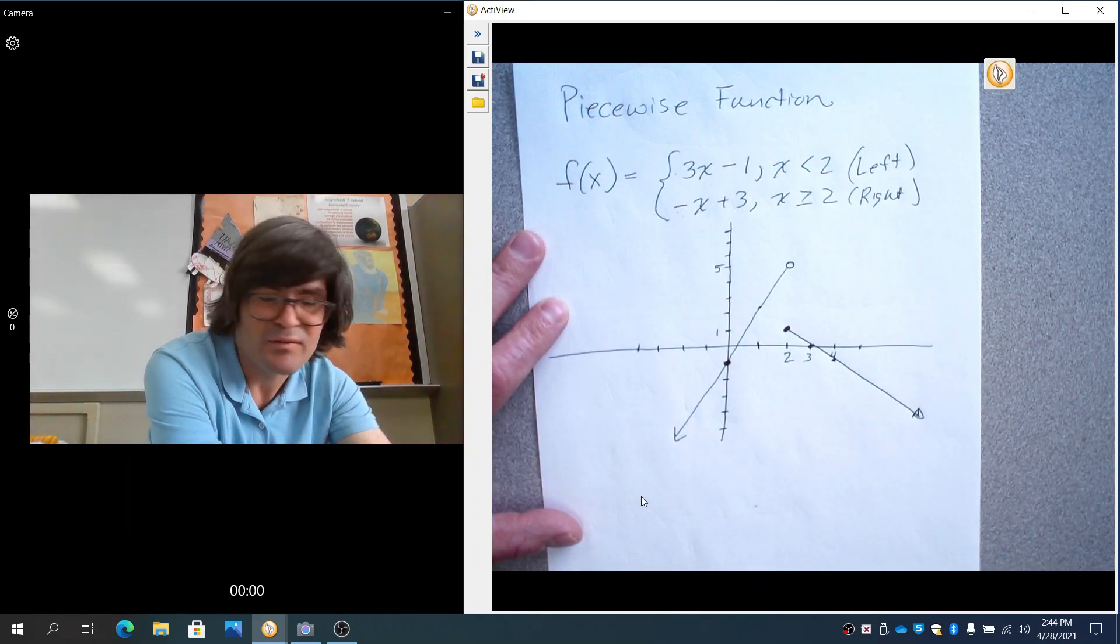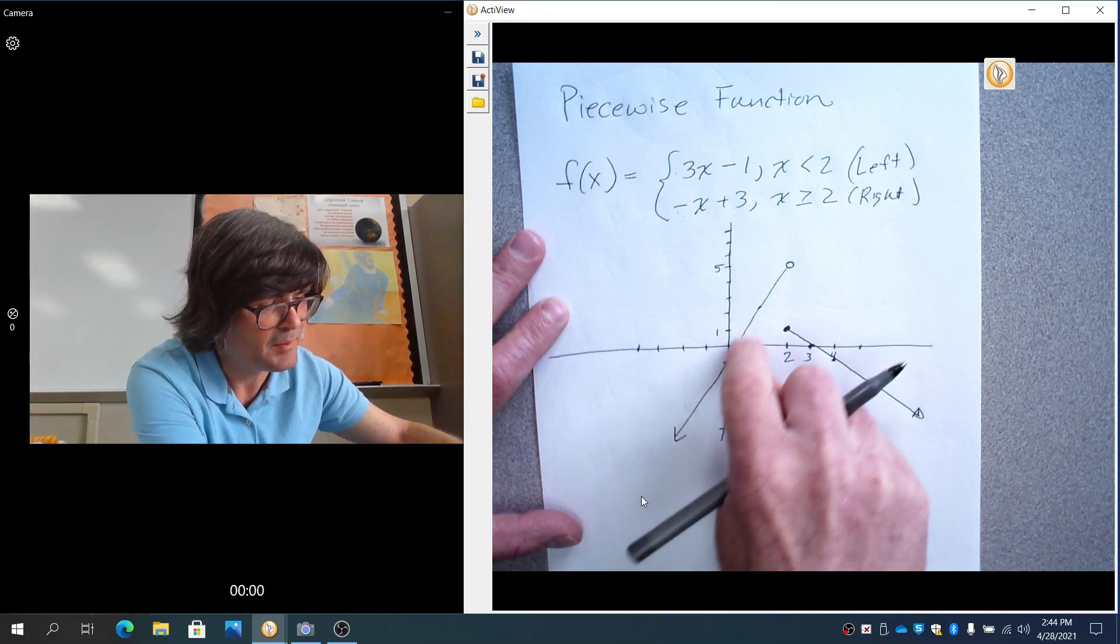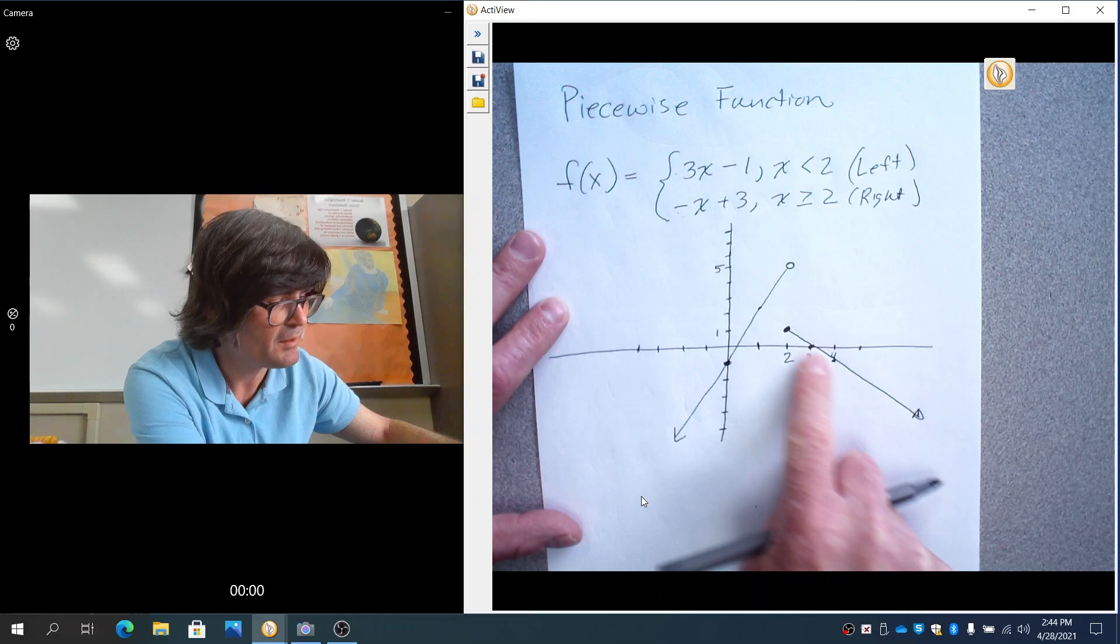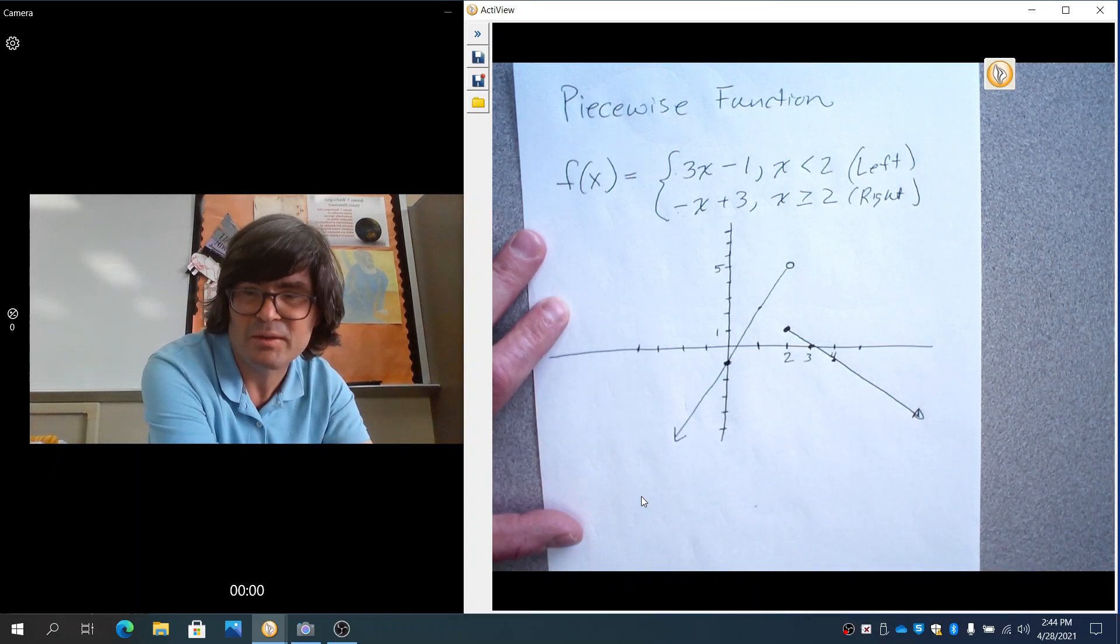And so that's a piecewise graph. If you trace this graph with your finger, it traces like this. Up, up, up, up, up. You get right before 2. And then you suddenly jump down here. And it continues on. That's all a piecewise graph is.